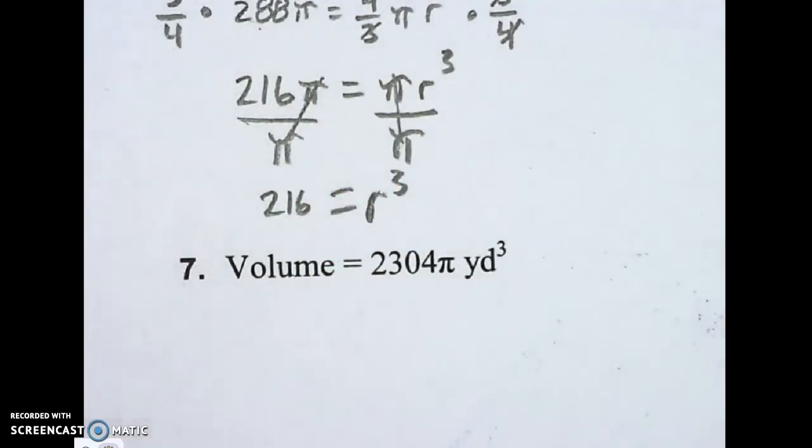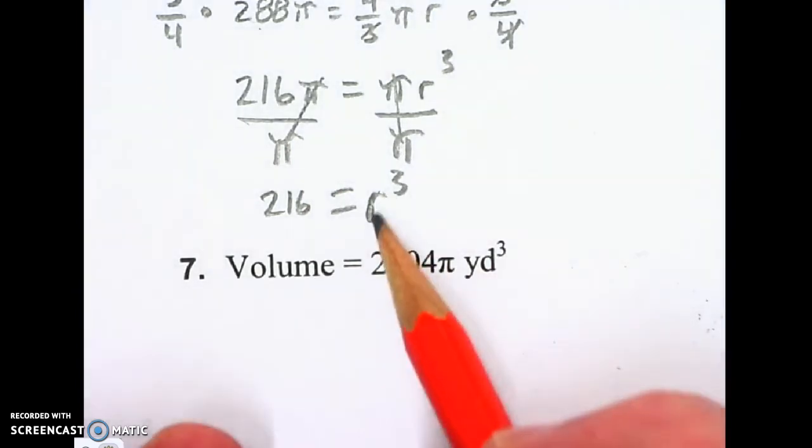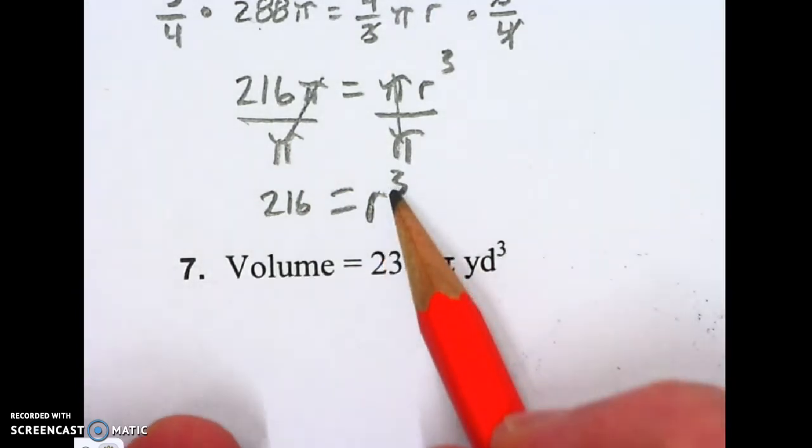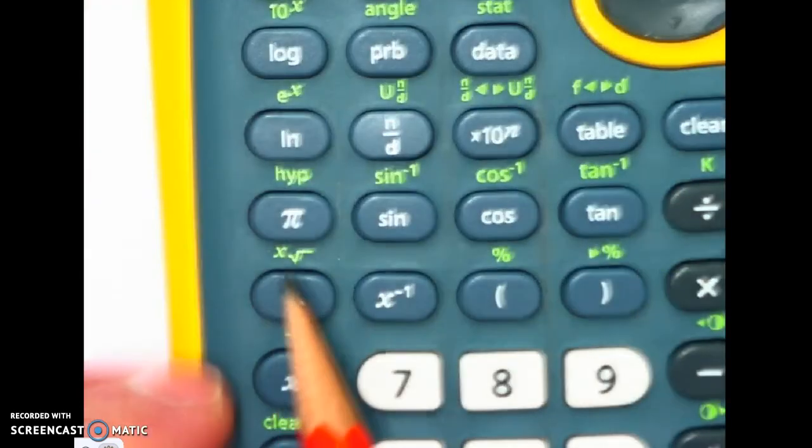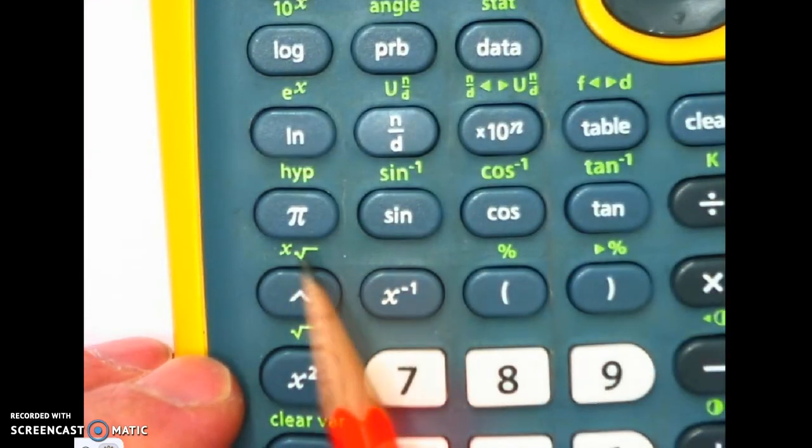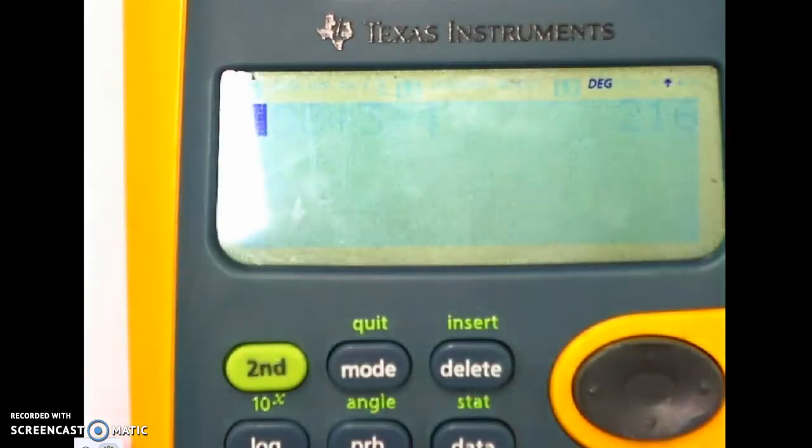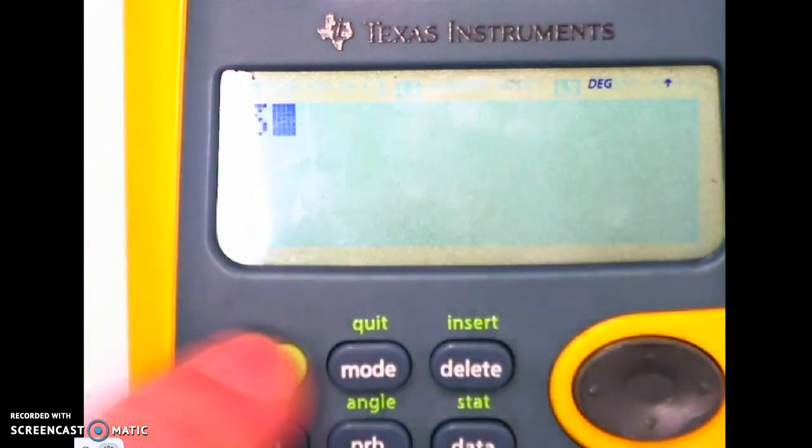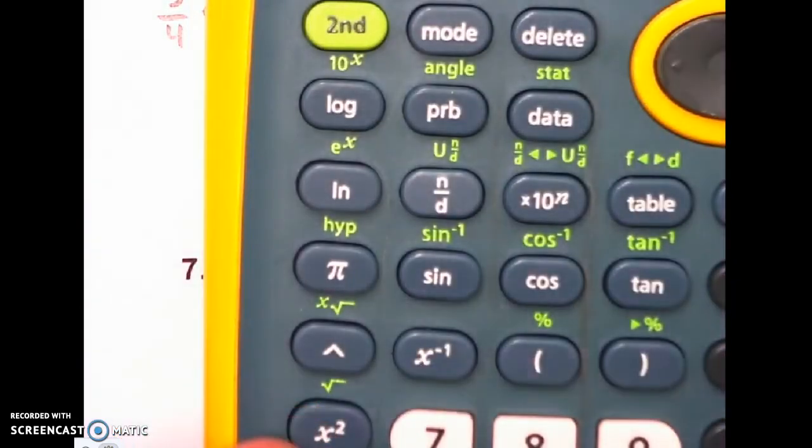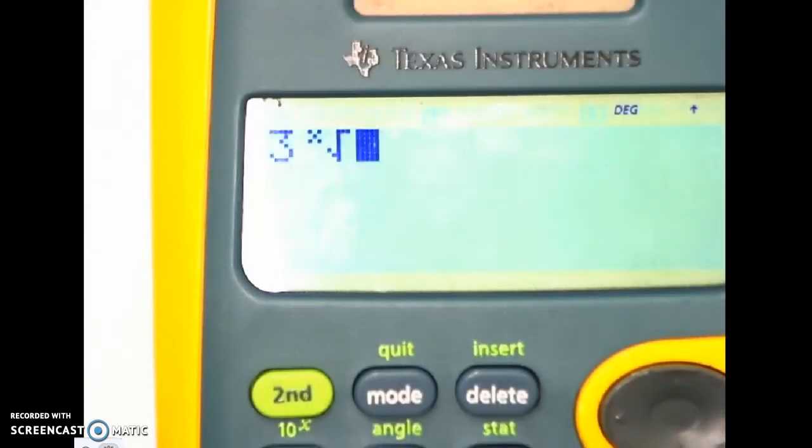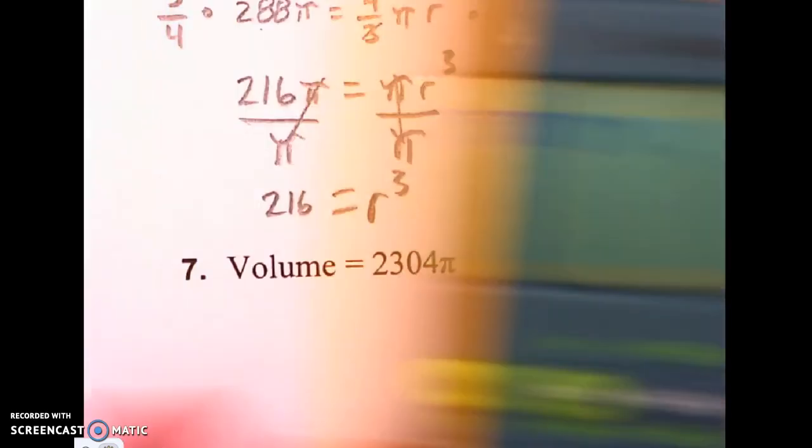My last step, I need to get rid of R to the third power. You have a button on your calculator that does that. That's this X root key. So we're going to use that. First thing I'm going to do is type in a 3. Then I'm going to hit 2nd. And then I'm going to hit that X root key. And I'll just type in the number I have there.